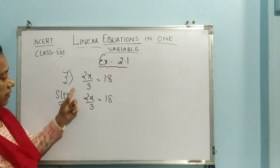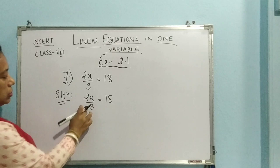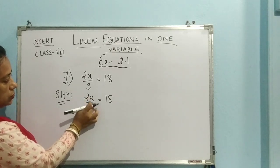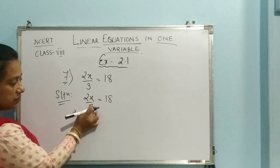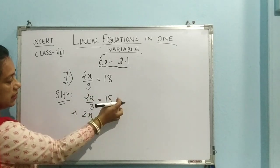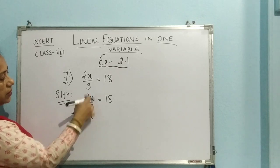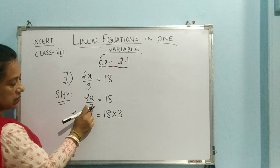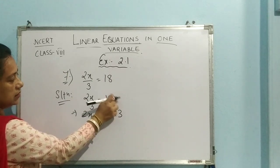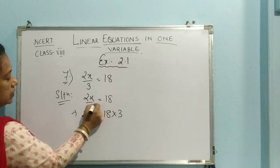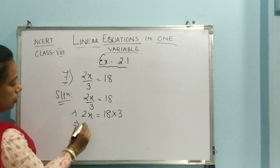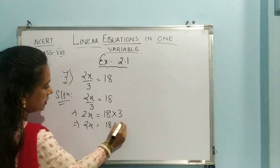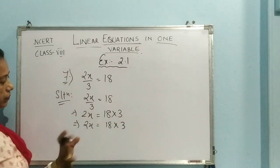See, here we are having 2x by 3 equal to 18. So the term which is having the variable is this one. So if I wish to put 2x here, 3 is the extra thing. So it is 2x by 3 means divided by 3. If it changes its side, division gets converted into multiplication. So 18 into 3. Since it was divided, it has changed its side, we have written 18 into 3.